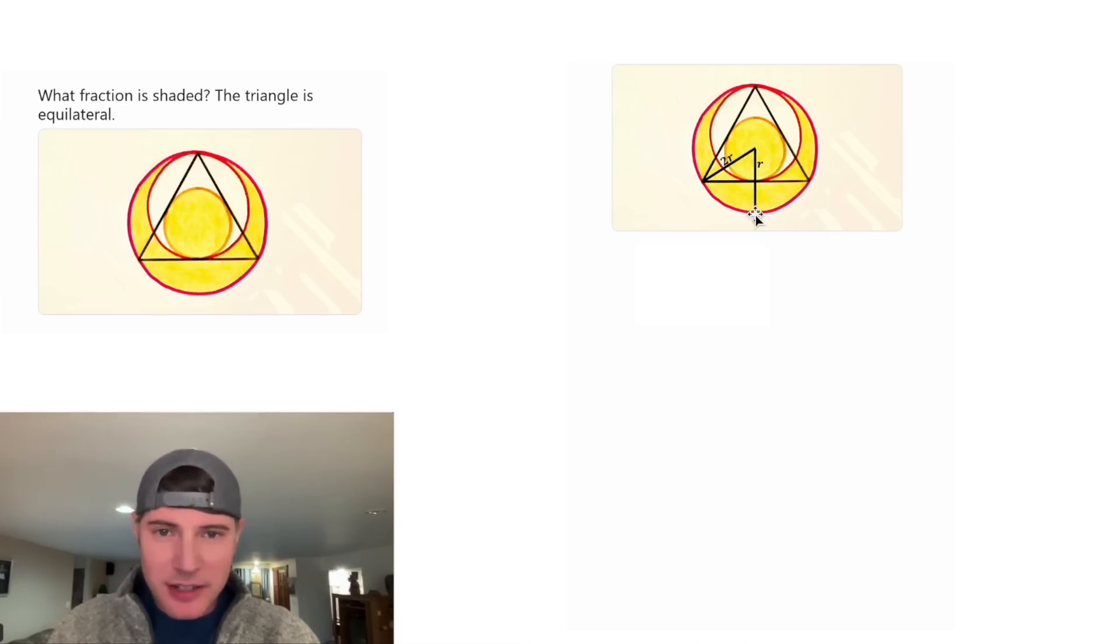So if we take this radius and extend it further, this whole thing is a radius of the larger circle, so it'd be equal to 2r, which means this piece would be 1r. And then we can do the same thing up here. We can draw this radius of the larger circle. It will also be split up into r and r, because this is the radius of the smaller circle, and then the whole thing is 2r.